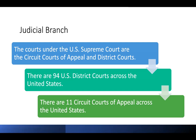There are 11 Circuit Courts of Appeals across the United States, and these are geographic, which I will show you in a moment. These are where our intermediate appeals come. Our final appeals come from the U.S. Supreme Court.